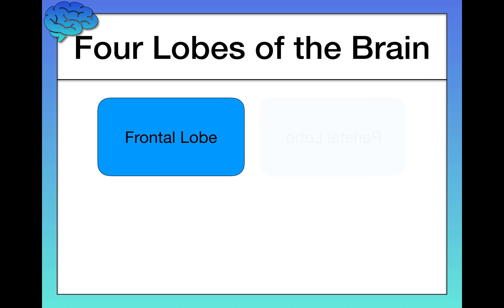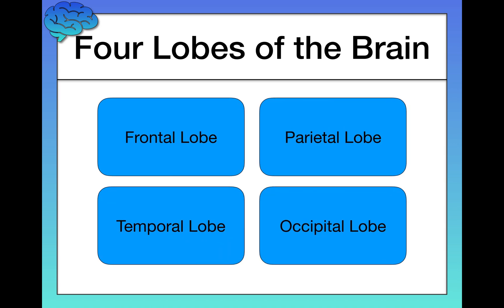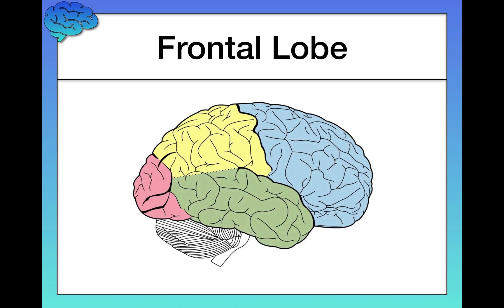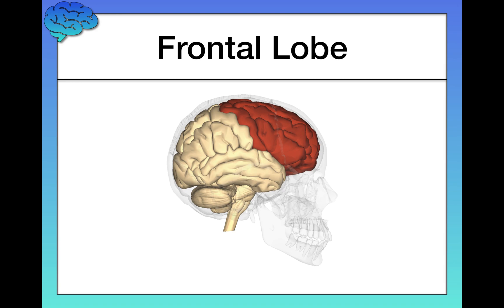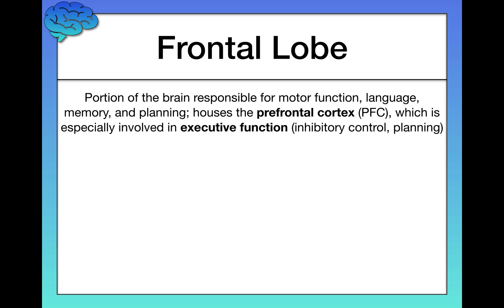The four lobes of the brain are the frontal lobe, parietal lobe, temporal lobe, and occipital lobe. Let's start with the frontal lobe. It's called that because it literally sits in front of your brain — about an inch or a little less underneath your forehead. You can see it's a large part of the brain, and here's another image showing it in context within the skull so you can see where it lies.